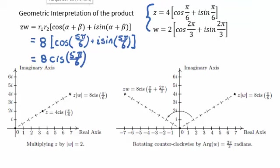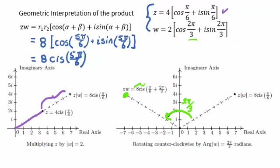Geometrically, we interpret this multiplication by taking our first complex number, 4 cis pi over 6, as a complex number pointing in that direction. Multiplication by W will lengthen our complex number by a factor of 2. The addition of 2 pi over 3 — the beta — then rotates our complex number counterclockwise by 2 pi over 3, giving us our new complex number 8 cis (pi over 6 plus 2 pi over 3), which equals 8 cis 5 pi over 6.